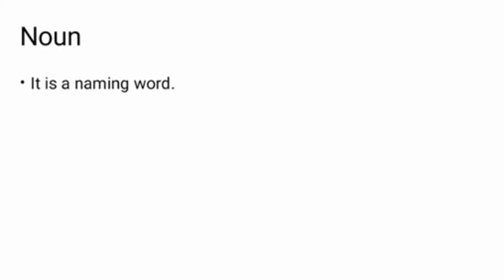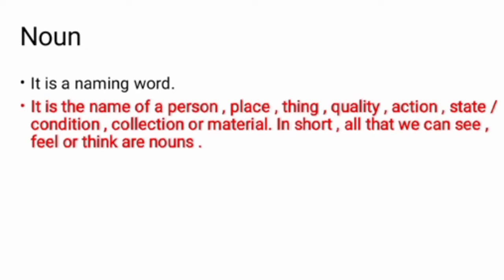Second definition. It is the name of a person, place, thing, quality, action, state or condition, collection or material. In short, all that we can see, feel or think are nouns.